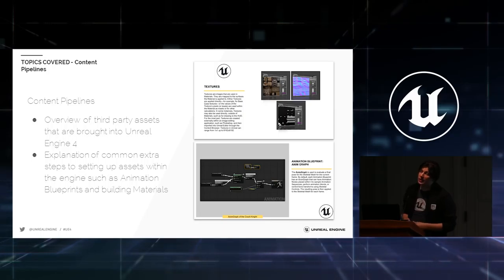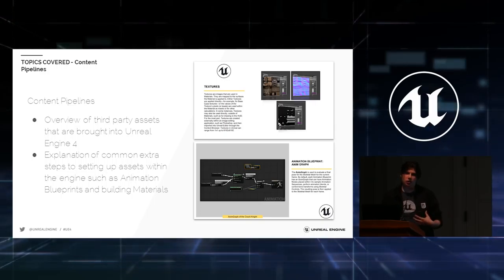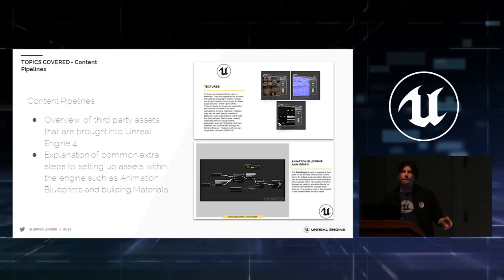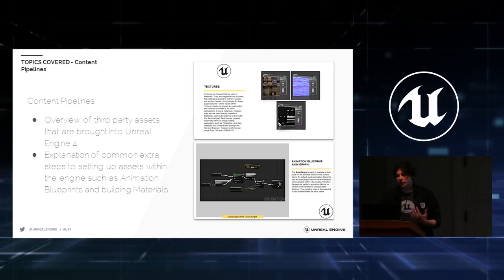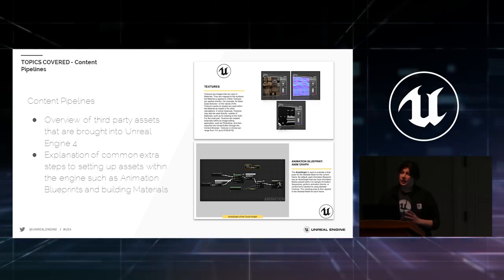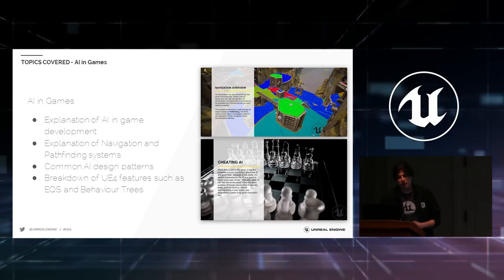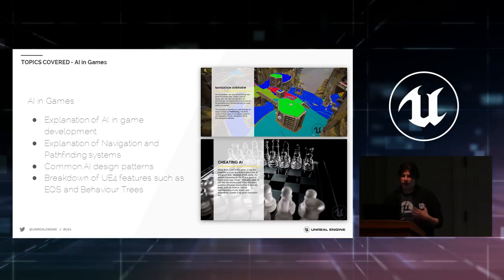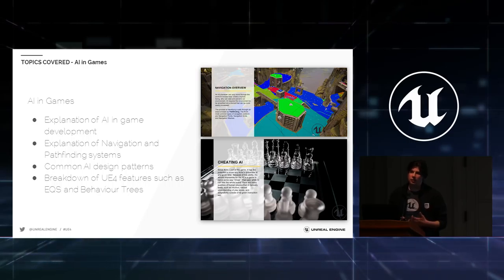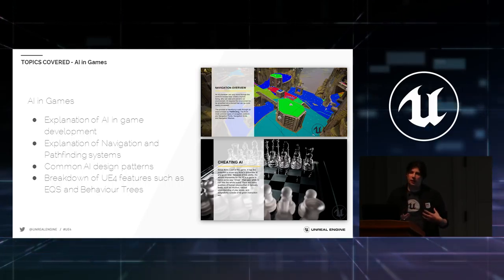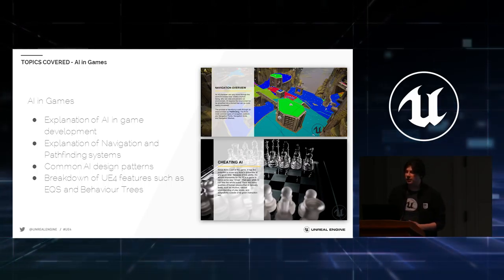Next, we go through the content pipelines — showing how content moves into the engine, where things start if you're an artist, where things end, and how certain things like materials bind different types of textures together. We also did a section discussing AI in games: common concepts like how AI can actually cheat, pathfinding, behavior trees, and how an AI can seem intelligent but in reality is following basic instructions.